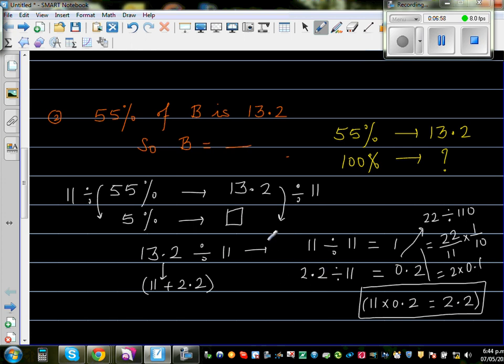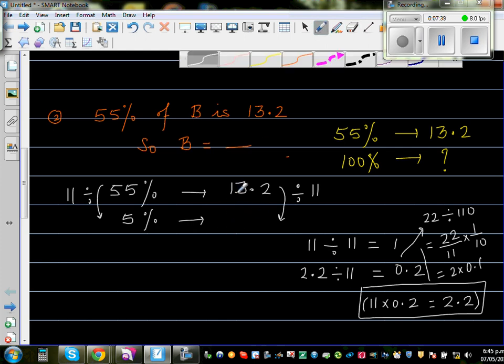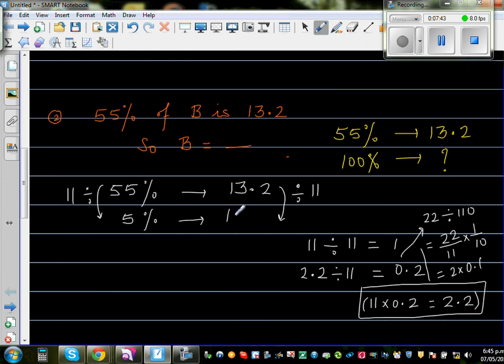Therefore 13.2 divided by 11 gives me 1 plus... so this is 1.2. So this is 1.2. We are still at 5%. So this is 1.2. So I want to reach to 100%. So from 5% can I find 10%? Well, if 5% is 1.2, 10% is double of that, which is 2.4.